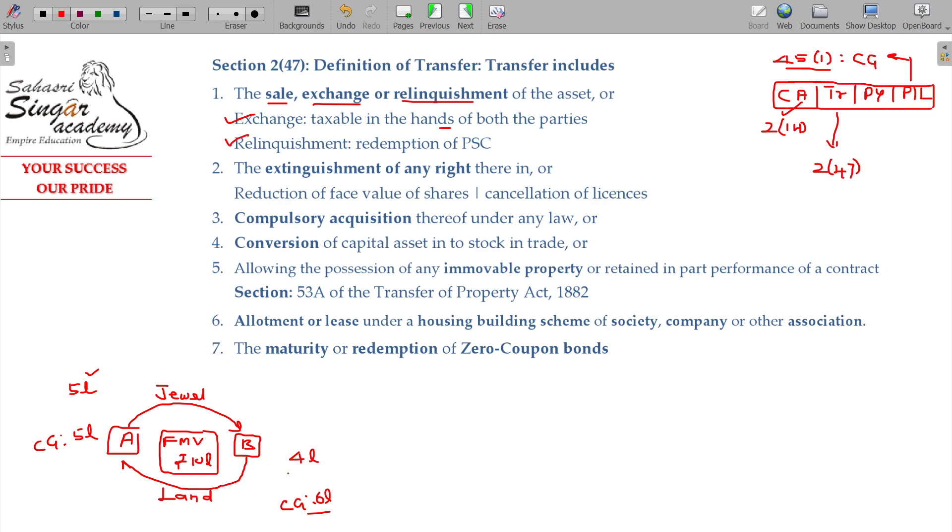In case of relinquishment, relinquishment in such cases is taxable. Like redemption of preference share capital is a good example for relinquishment. If I am losing my right over that company because of the redemption, that is relinquishment.